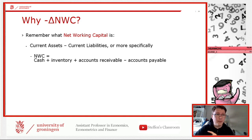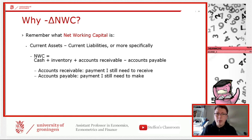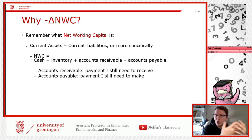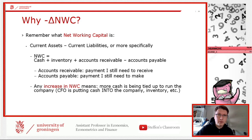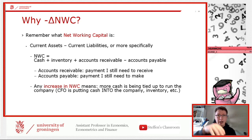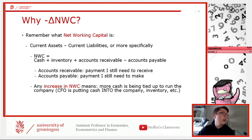Accounts receivable is money you are still waiting to receive — goods already sold but payment not yet in. Accounts payable is money you still owe to suppliers. The net working capital captures the difference: money in versus money out. When you calculate free cash flow, you take the change in net working capital because more cash tied up in running the company is a cash outflow for the project.